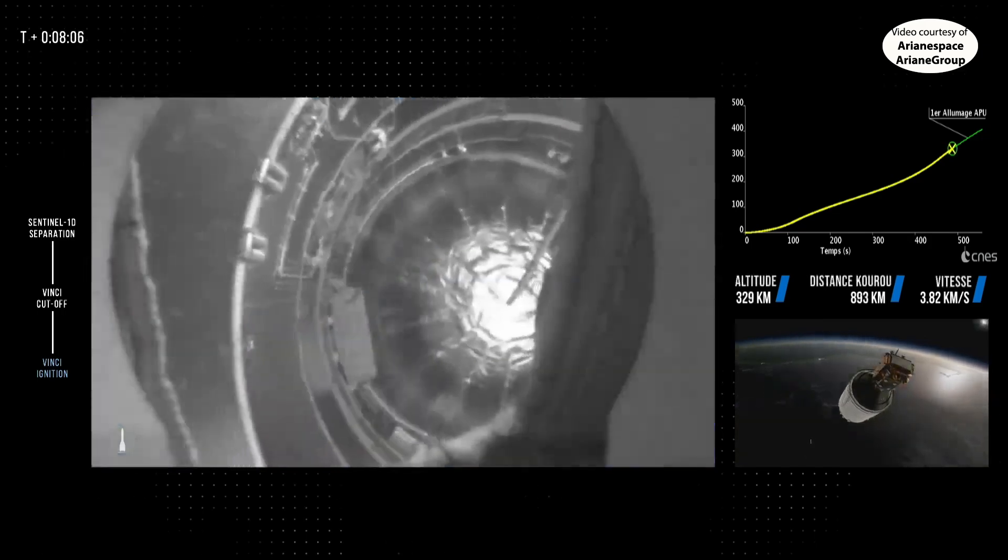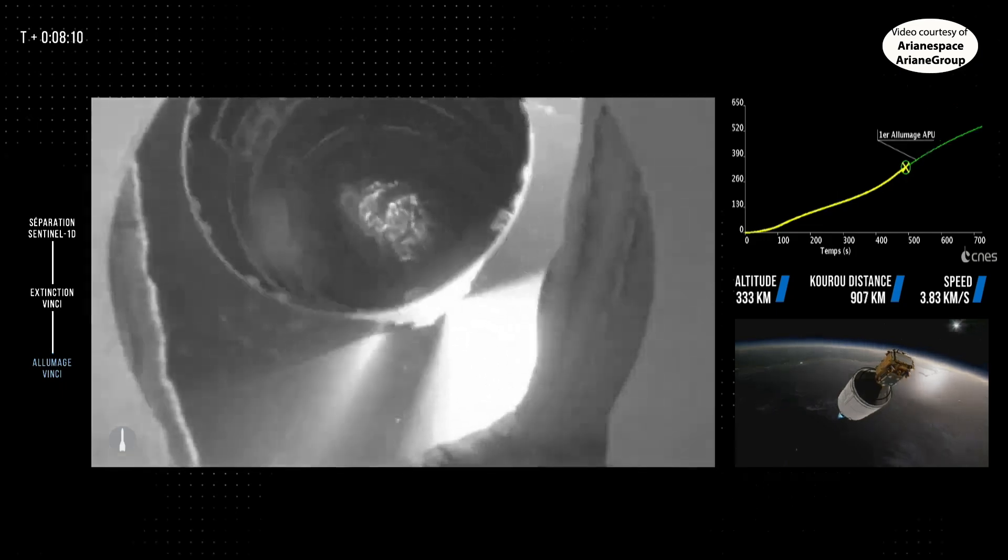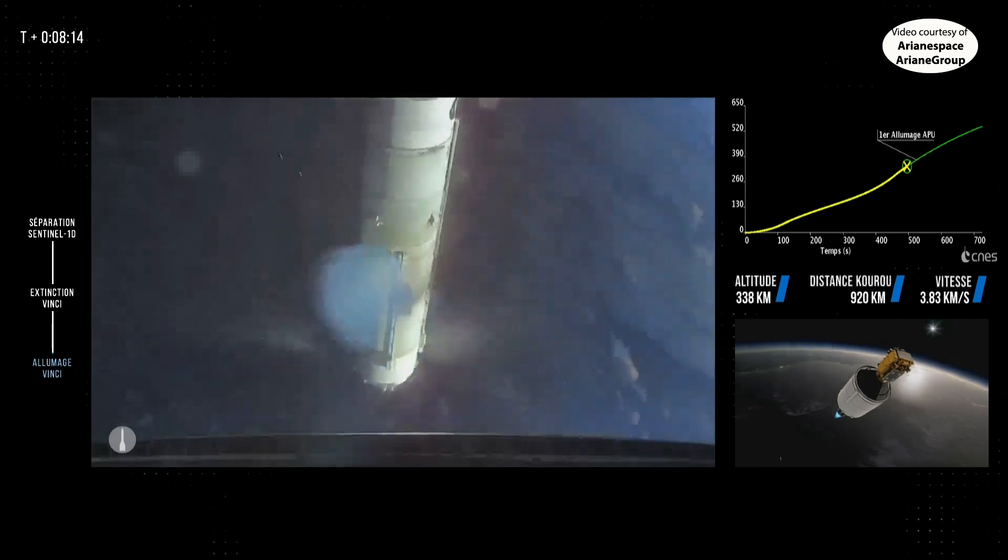Here it comes. Nice view. This is seen from the lower part of the Vinci. Fantastic image there of it being jettisoned.